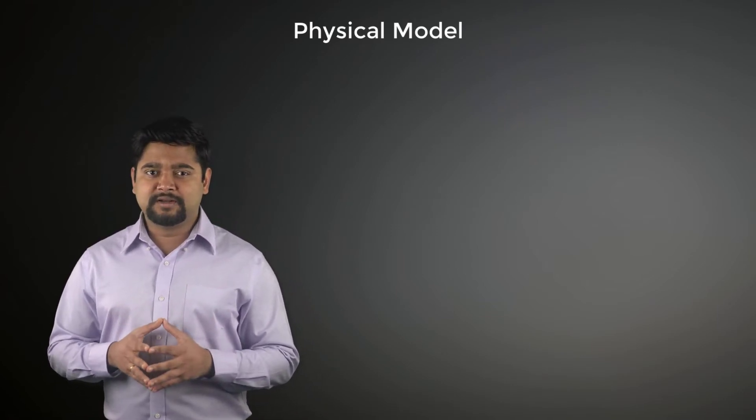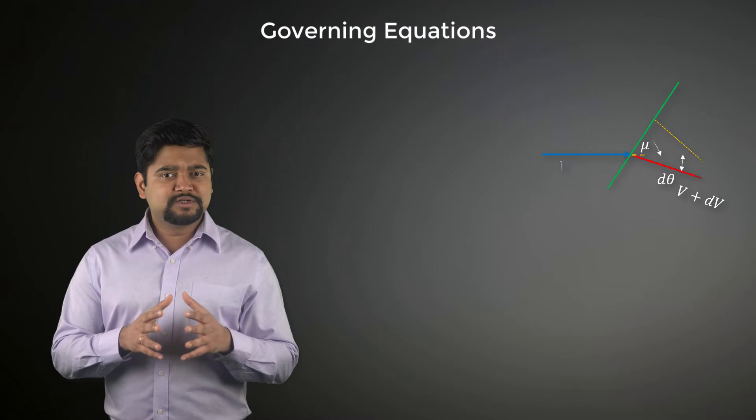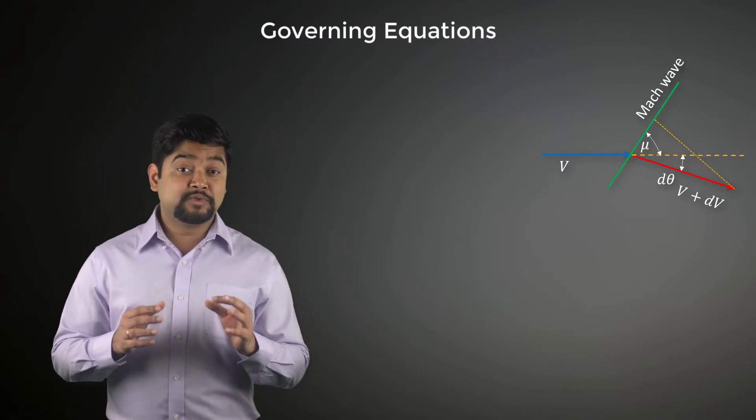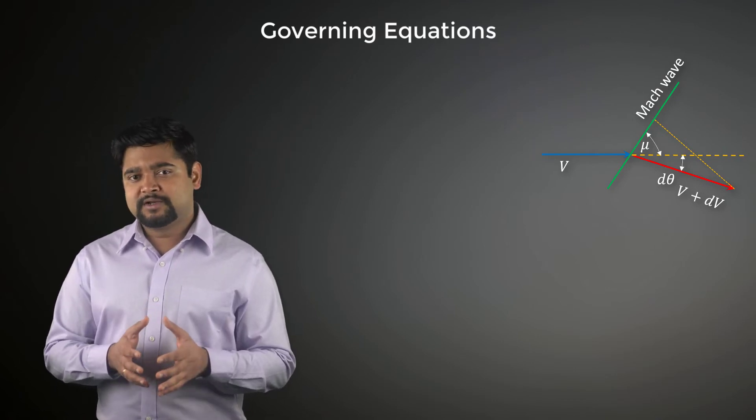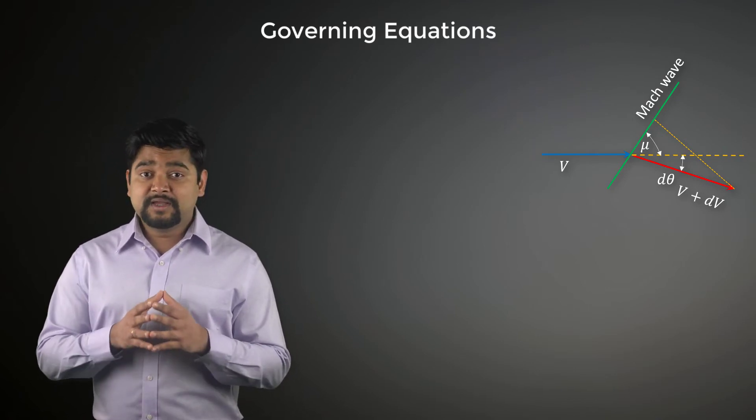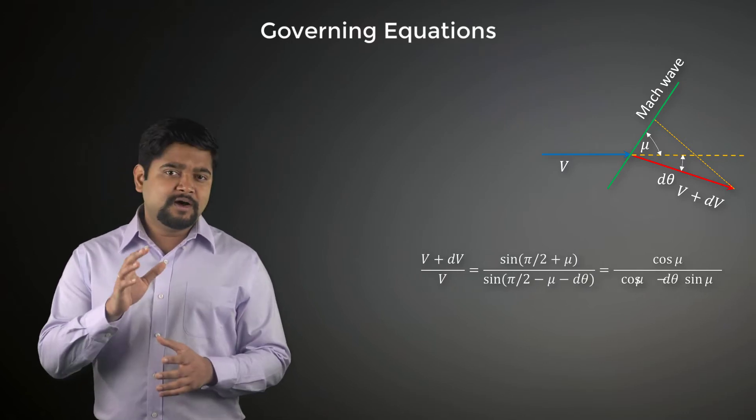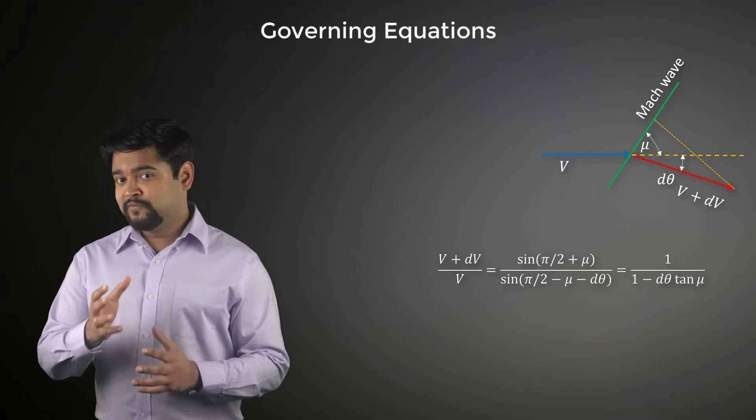Consider a single Mach wave for a flow being turned through a differential angle d theta. From geometric and trigonometric considerations, we can get the following equation. Now for a small d theta, this can be simplified to the following expression.